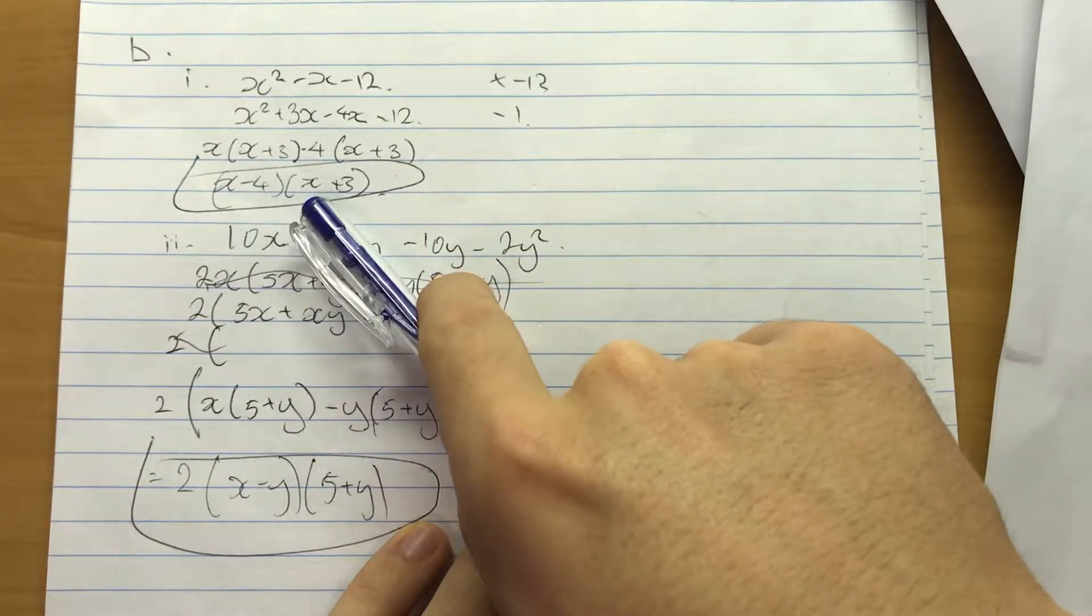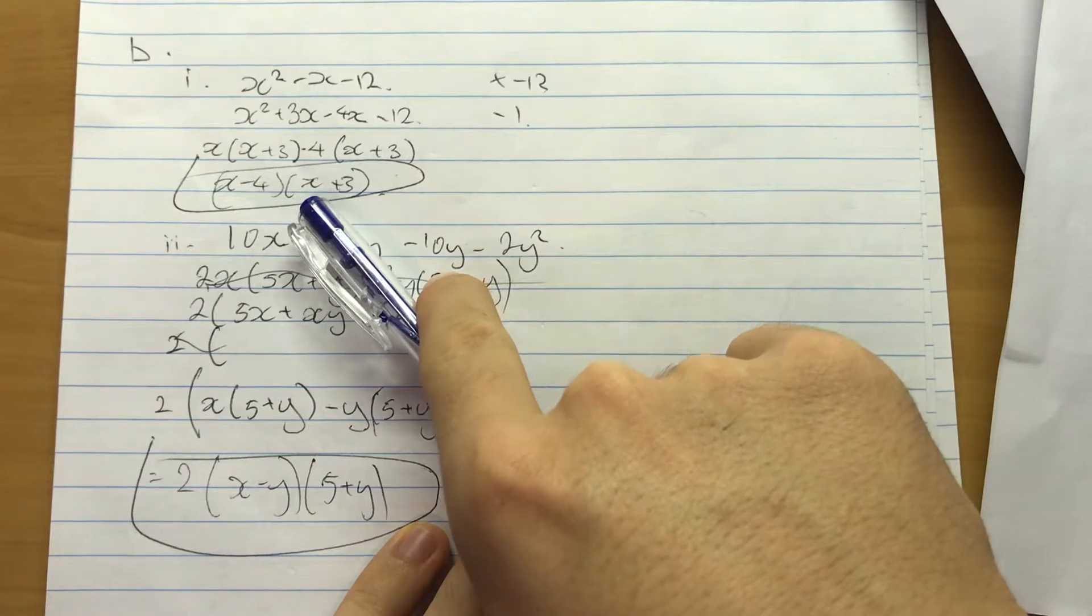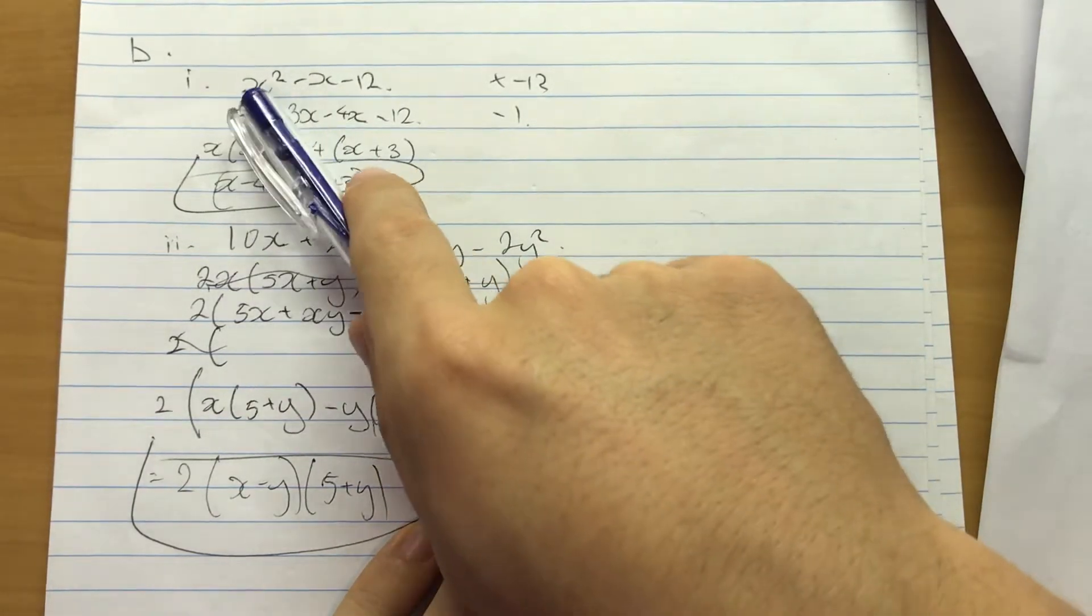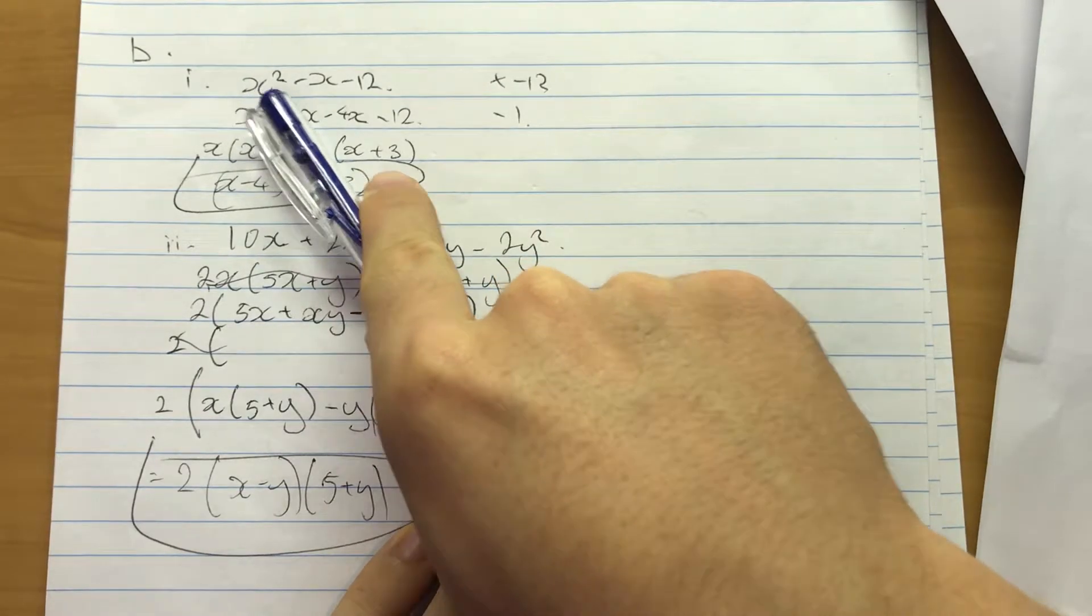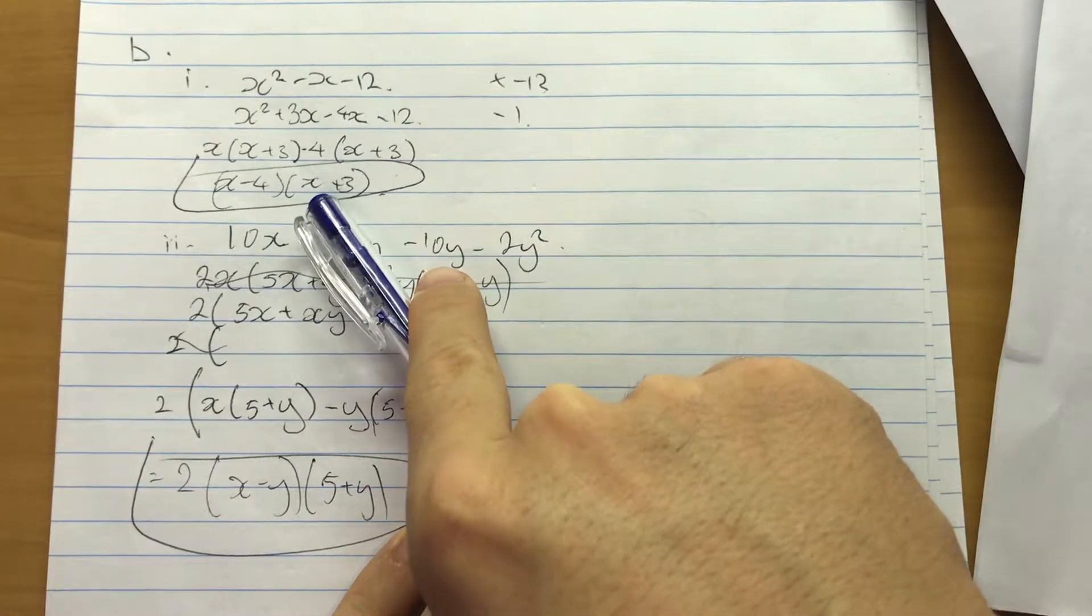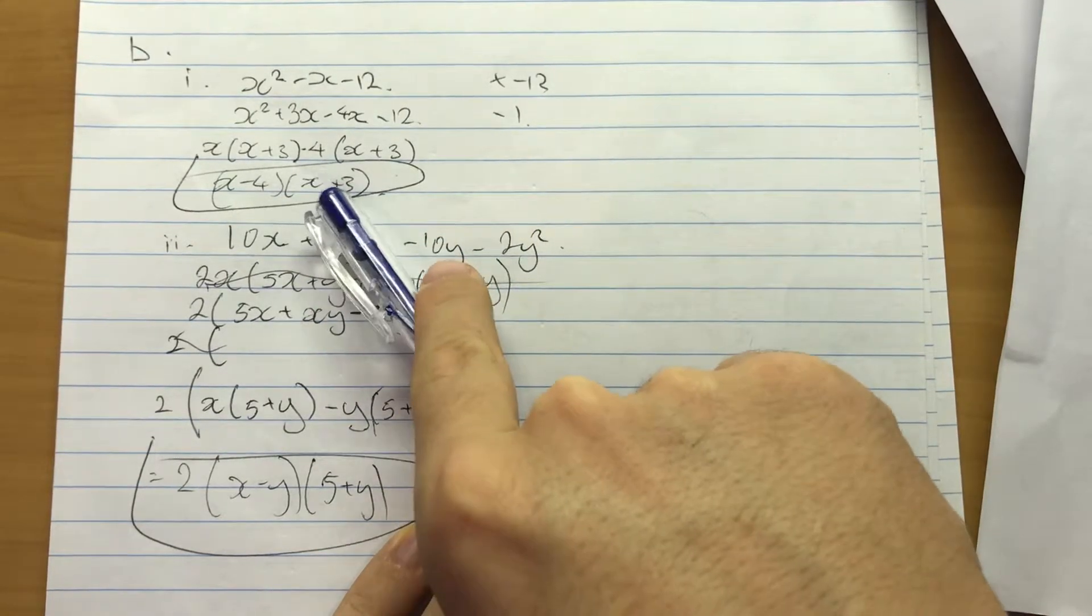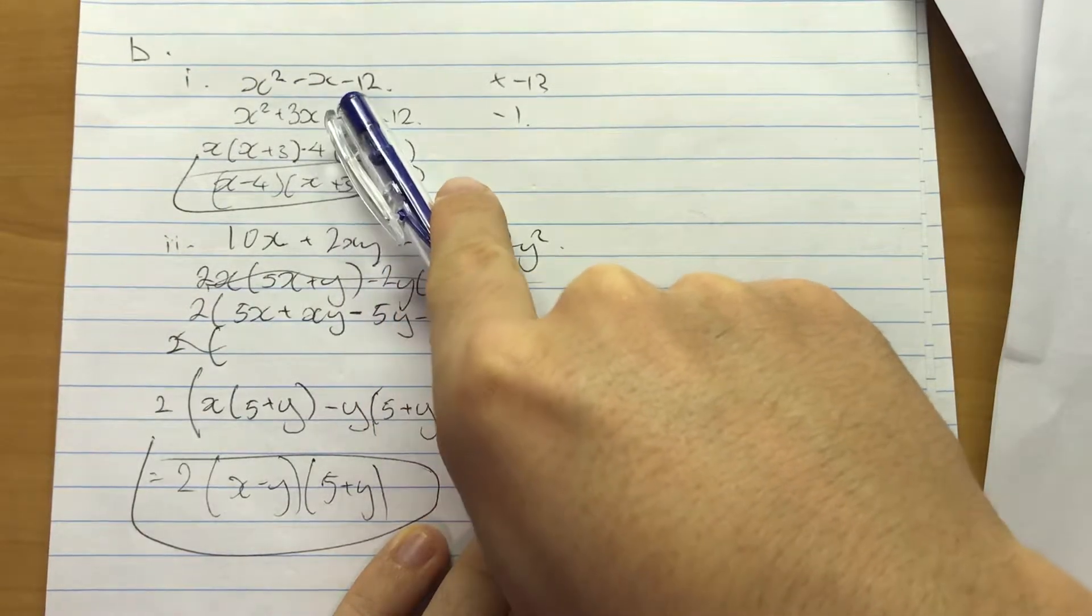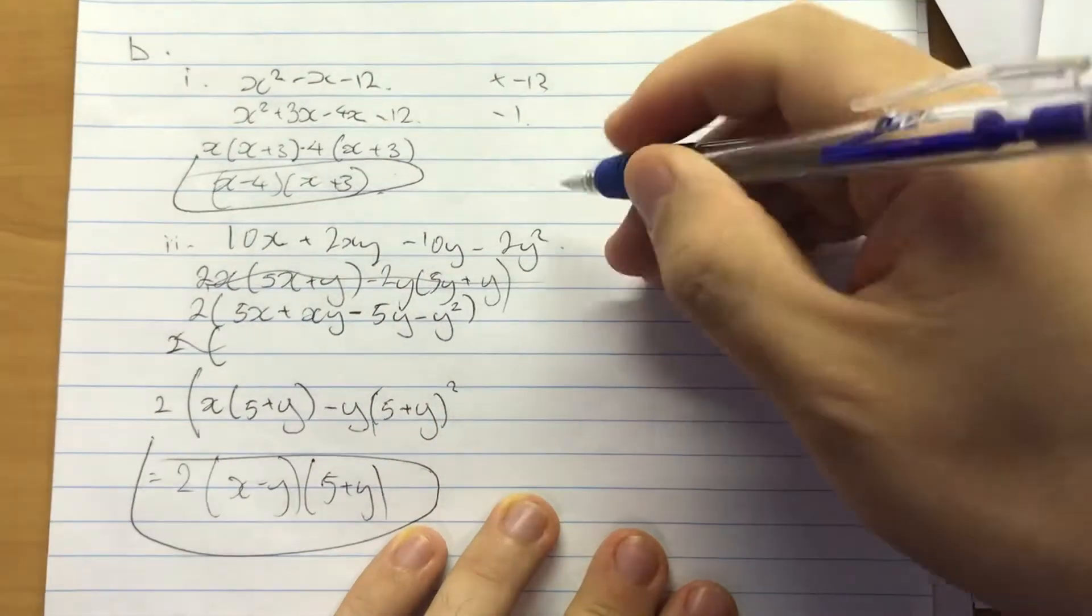So when you have a factorization, one obvious check you can do is when you put 4 in it gives you 0. Okay, so if you look at the original equation, if you put 4 in you get 16 - 4 is 12 and 12 - 12 is 0. So that's good. Next, (x+3), if you put -3 in you should get 0. So 9 + 3 is 12 minus 12 is 0. Okay, so this is going to be right.